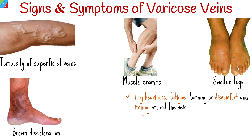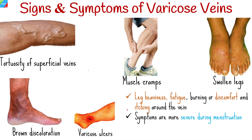Additional presentations include discomfort and itching around the vein, brown discoloration of the skin especially around the ankles, pain if a varicose ulcer develops, and symptoms that are more severe during menstruation. Some people are concerned about the appearance of their veins even if they don't have symptoms.